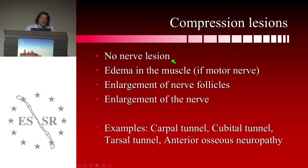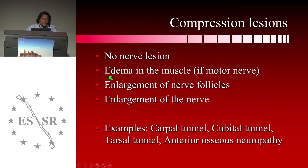The first lesions I will show are compression lesions, where ultrasound can show several different possibilities. The first is that you don't see anything — no nerve lesion on ultrasound. Sometimes when you deal with a motor nerve you can see an edema of the muscle innervated by that nerve. You can also see enlargement of nerve fascicles or enlargement of the nerve itself.